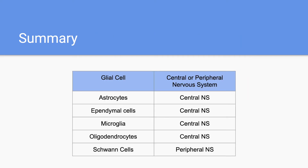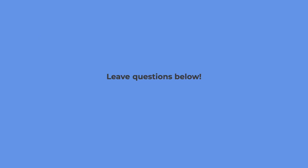In summary, we have five main glial cells that we discussed: astrocytes, ependymal cells, microglia, oligodendrocytes, and Schwann cells. All of them, except for Schwann cells, are part of the central nervous system. I hope this video was helpful in explaining the different glial cells. If you have any questions that I can help with, please leave them below. Thank you.